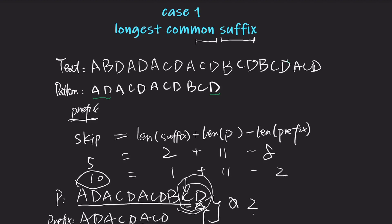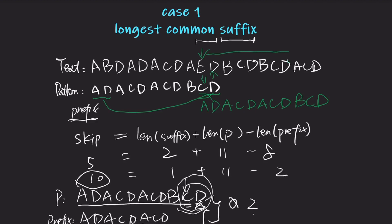Let's verify with this example. If the prefix length is 2 and the longest common suffix length is 1, we should align this part so that this D aligns with this D, and shift the pattern accordingly: A, D, A, C, D — A, C, D — A, C, D — B, C, D. The text pointer was here, and we move it. Let's count: 1, 2, 3, 4, 5, 6, 7, 8, 9, 10. It's 10 — correct.